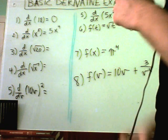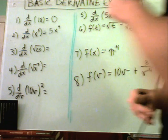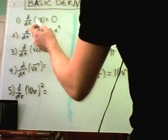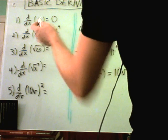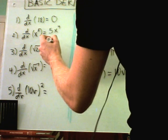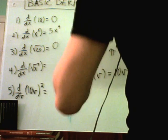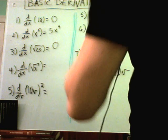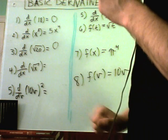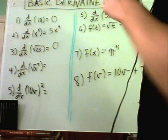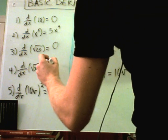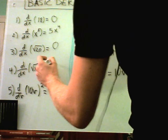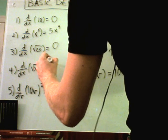Now we have the derivative of square root of 20, but square root of 20 is a number just like 18 is a number, so you'll get zero. The derivative of square root of x, now that's different because x is not a constant, it's a variable.